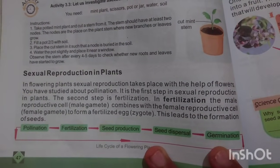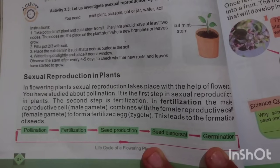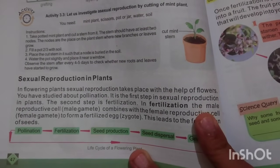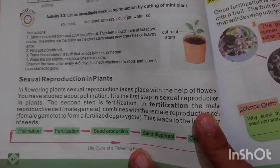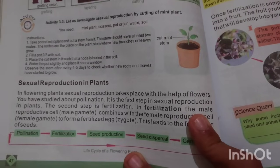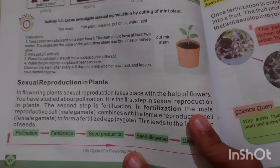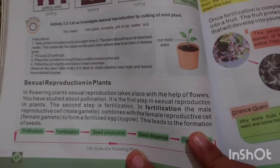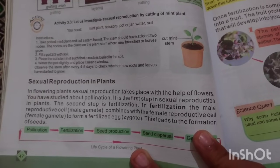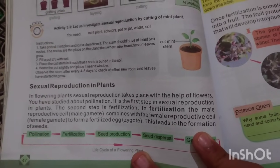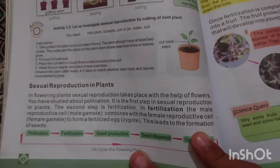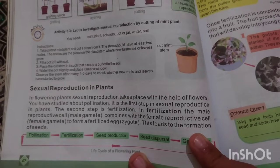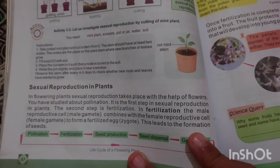In sexual reproduction in flowering plants, the first step is pollination, which you have learned about. The second step is fertilization, in which the male reproductive cell combines with the female reproductive cell to form a fertilized egg. This leads to the formation of seeds.